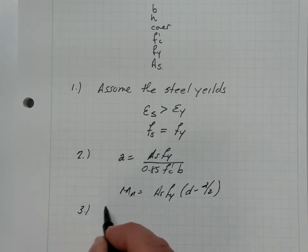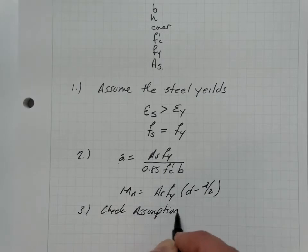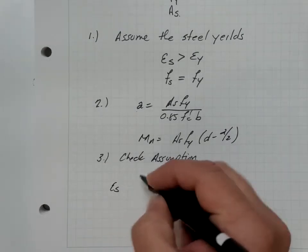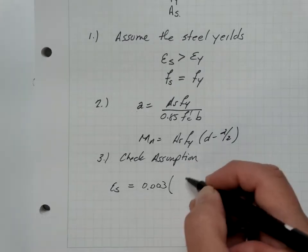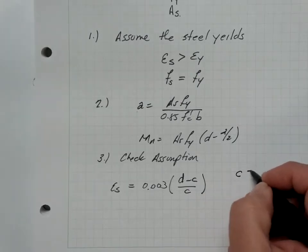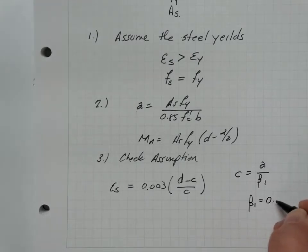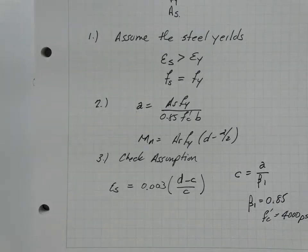The nominal moment capacity is equal to A_S F_Y times (D minus A over 2). Our third step is we check that assumption — we ask what is the actual strain in the steel, which is equal to 0.003 multiplied by (D minus C) over C, where C equals A divided by beta_1. Beta_1 equals 0.85 when F'_c equals 4,000 psi.